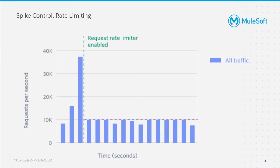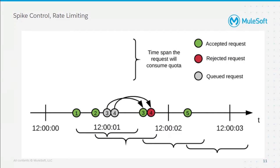What happens in spike control versus rate limiting? They are quite similar. In rate limiting, the excess number of requests will be completely cut off and those requests will be lost. But in spike control, those requests will be retained in the form of a queue — they'll be stored and processed later after a certain duration of time. There's a time gap or window slot, and after the particular window frame, these requests are retried.